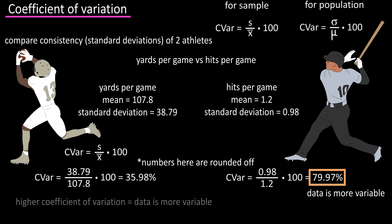Since Mankata's coefficient of variation is larger, his data is more variable than Thomas's. A higher coefficient of variation means the data is more variable, so Thomas is more consistent based on his data.